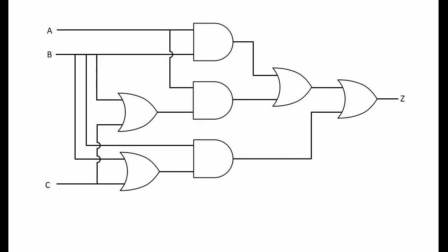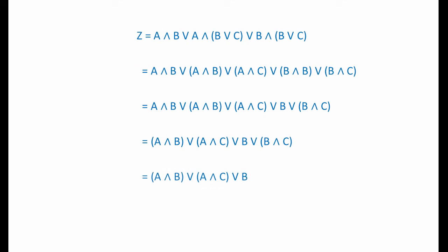Before looking in detail at the laws of Boolean algebra, let's briefly consider why we need them. Here's a complex combination of logic gates, and here's an expression that describes the output Z in terms of the inputs A, B and C. This Boolean expression is an accurate description of this particular circuit. Boolean algebra can be applied step by step to reduce a complex expression like this one into its simplest form.